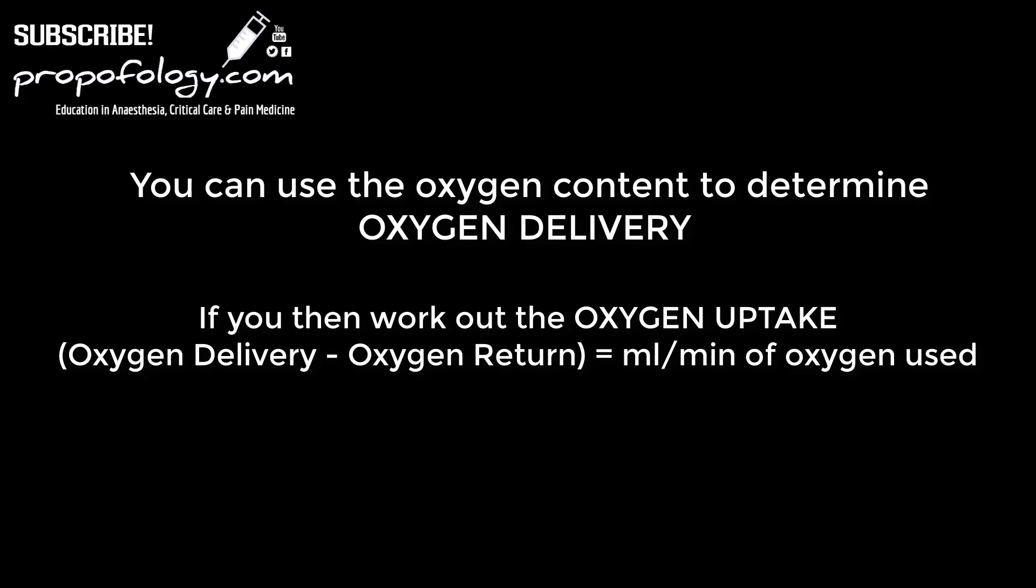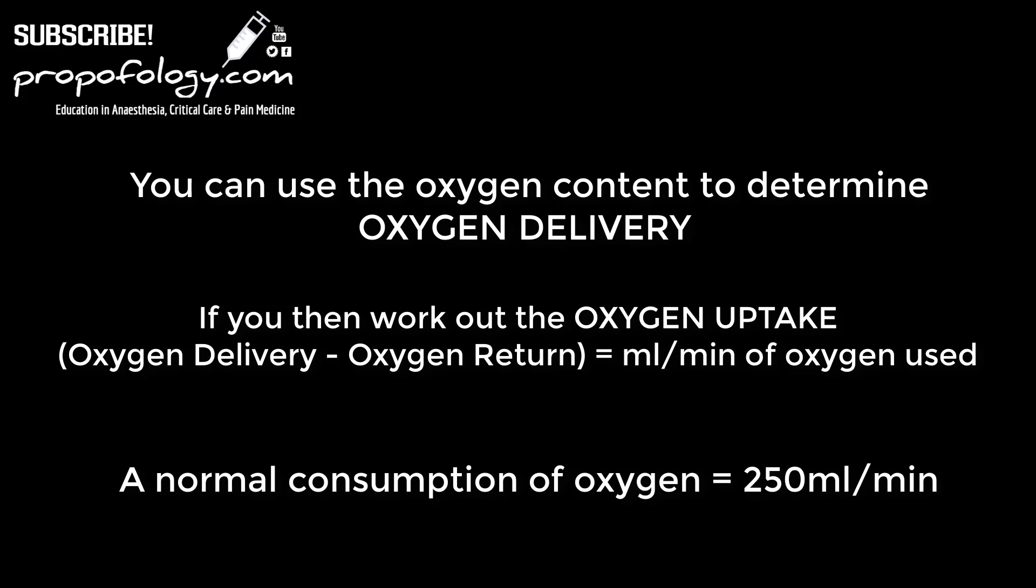You can then calculate the amount of oxygen uptaken by the body by using oxygen delivery minus the oxygen return. This will give you the mils per minute of oxygen used. A normal consumption of oxygen in a healthy patient is about 250 mils per minute and that's why modern ventilators won't allow you to go below this value whenever it comes to supplying oxygen to the patient.